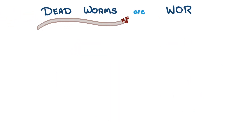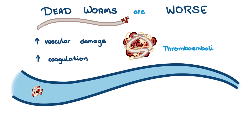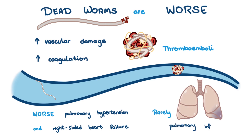Dead worms are worse — inflammatory reactions are way more severe, with greater vascular damage and increased blood coagulation around them. The dead worms become thromboemboli, floating into the smaller arteries and arterioles and getting stuck. Live worms don't usually get stuck unless it's really crowded. The thromboemboli worsen pulmonary hypertension and right-sided heart failure. Rarely, pulmonary infarctions can occur.